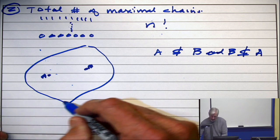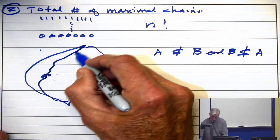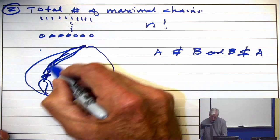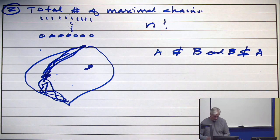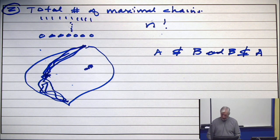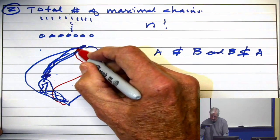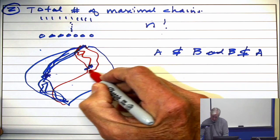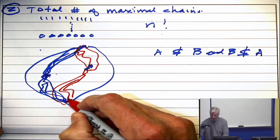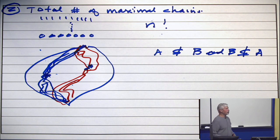So there are some maximal chains which go through this set, and there are some maximal chains which go through them both.